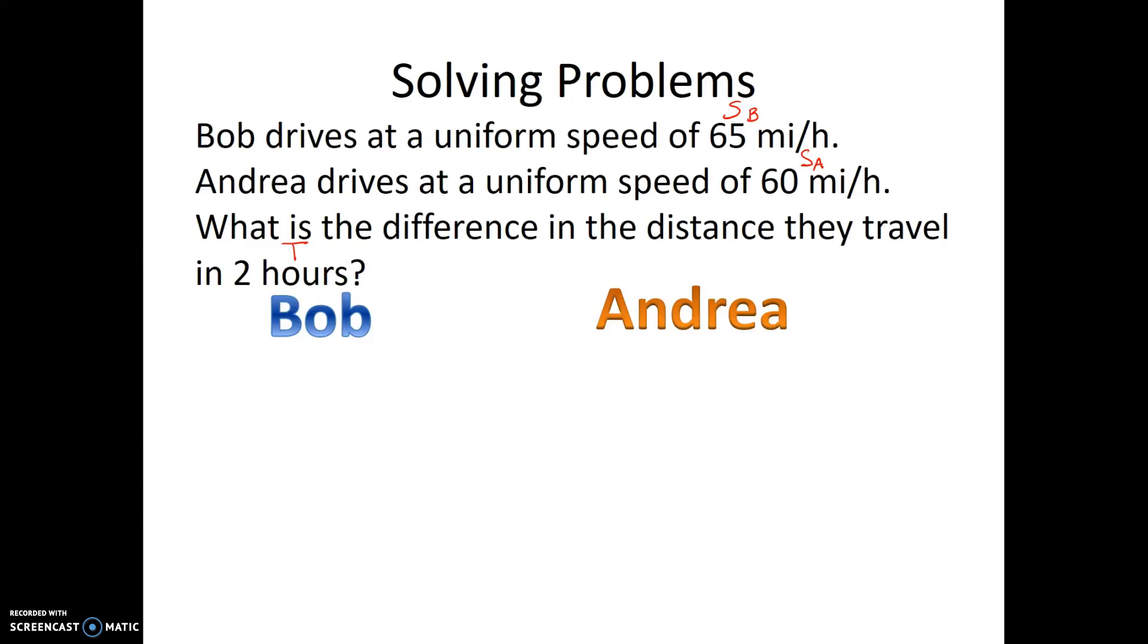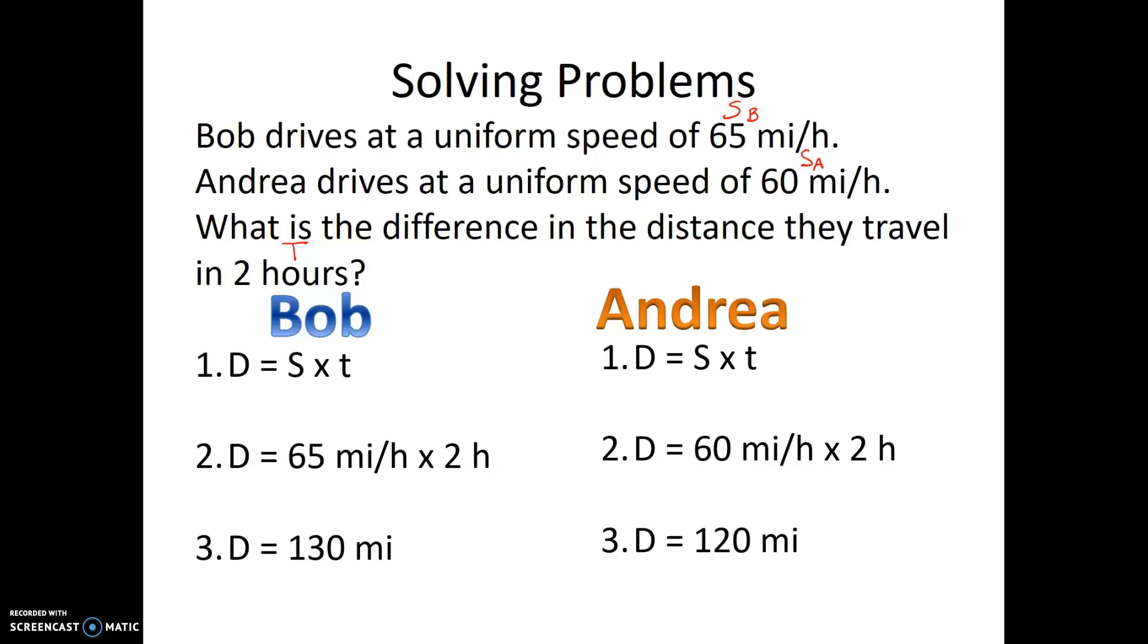The time is going to be the same for both Bob and Andrea, but obviously Bob's going to go a little bit farther. So let's use our distance formula: speed times time. Bob's driving at 65 miles per hour for two hours, so he's going to drive 130 miles. Andrea is driving at 60 miles per hour times two hours, so she's going to drive 120 miles. We're not done yet—we need to find the difference, so we subtract 120 from 130, and the difference is 10 miles, not miles per hour. The question was a distance question, so it's in miles.